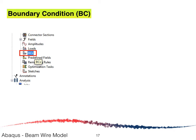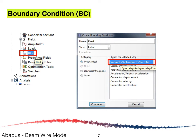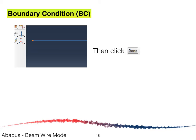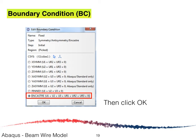For the boundary condition, double-click on Boundary Condition. In the Create Boundary Condition window, select Symmetry and click Continue. Since the beam is fixed on the left-hand side, select that end and click Done. In the Edit Boundary Condition window, select ENCASTRE, which sets displacements U1, U2, U3 and rotations UR1, UR2, UR3 all equal to zero at that point. Click OK.